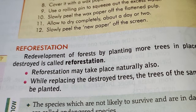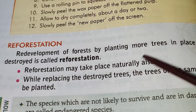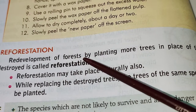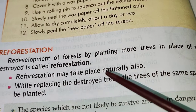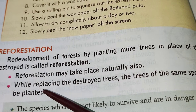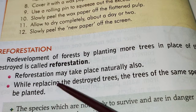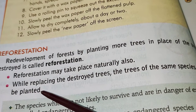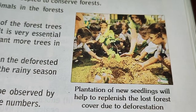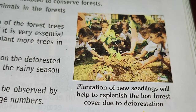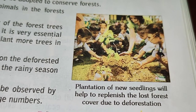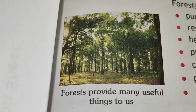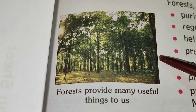Our last topic in this chapter is reforestation. Development of forest by planting more and more trees in places where deforestation has been done is called reforestation. Reforestation may take place naturally or by humans. While replacing destroyed trees, trees of the same species can be planted. Planting new seedlings will help replenish lost forest due to deforestation, and we will get our forest cover back on the earth.